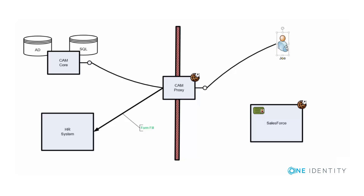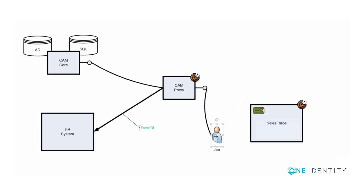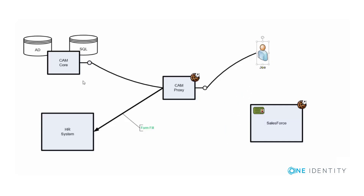So we're seeing two scenarios: one is federated access to something in the cloud like Salesforce; one is access to something like an HR system using a form-fill paradigm. One thing I want to make perfectly clear about this architecture: it doesn't matter where Joe is. If you remove the firewall, everything works like before. Joe could be sitting at his desk behind the company firewall and still get access to Salesforce or form-fill into the HR system.